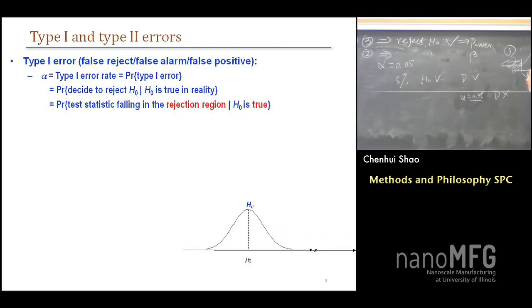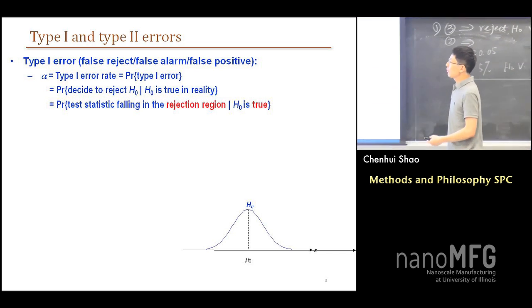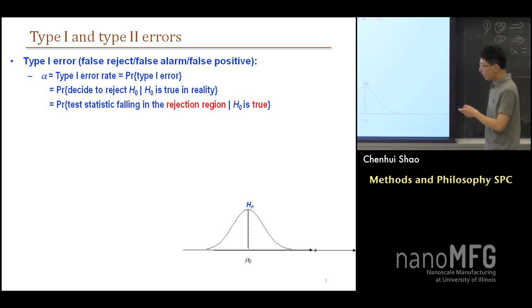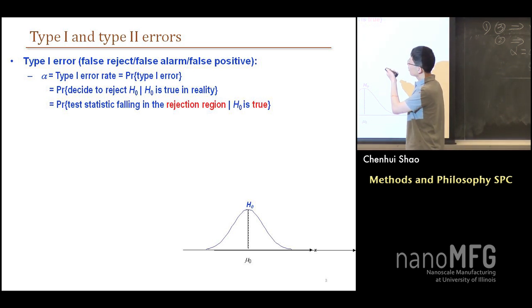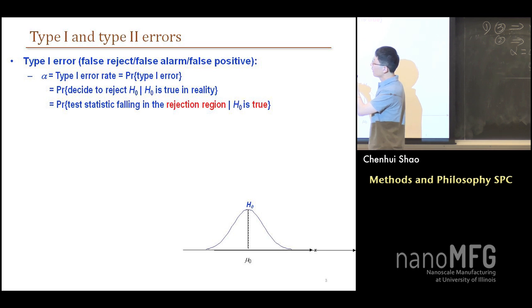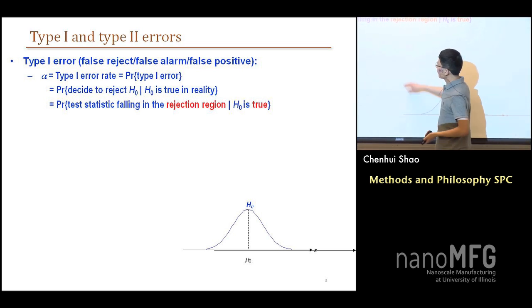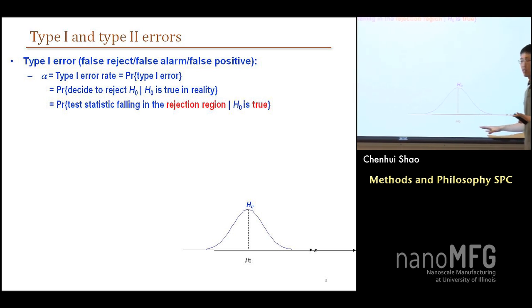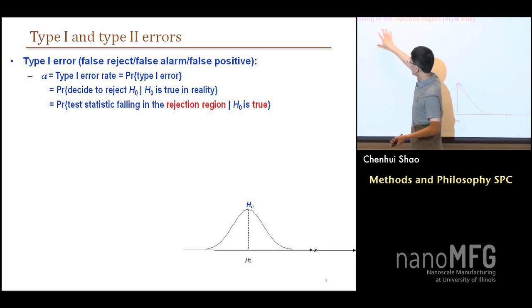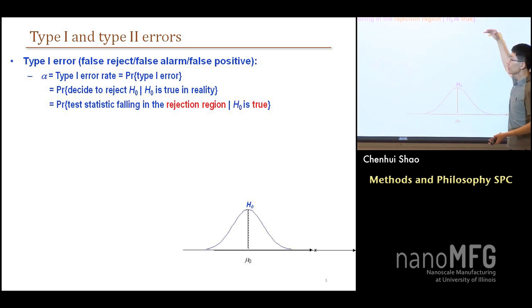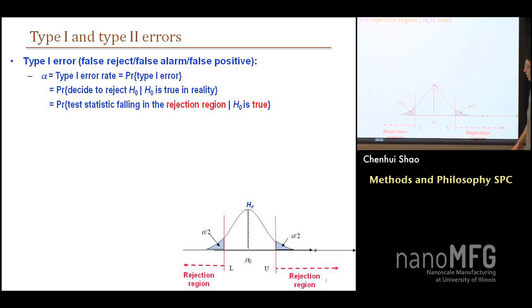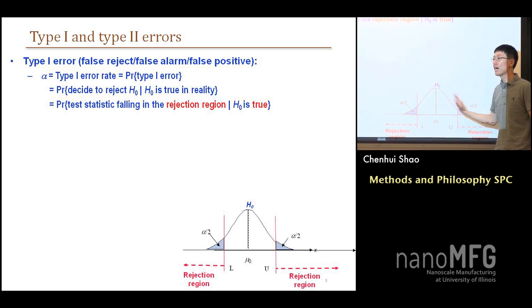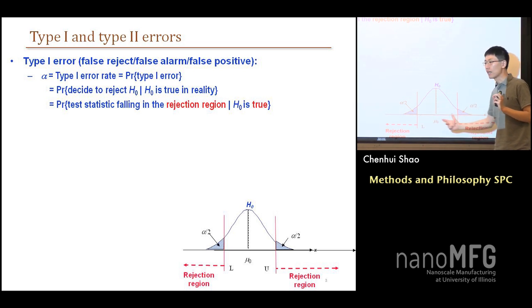All right, so now how do we calculate this? We translate the concept of Type 1 and Type 2 into formulas. Type 1 error rate is a conditional probability: given that H-null is true in reality, the probability that we reject H-null. We use our test statistic z-zero or t-zero — based on your assumption — and it falls in the rejection region given that H-null is true. We calculate the sum of these two probabilities, which is the area in the two tails. So alpha is controllable — we can choose our alpha by deciding on the limits.